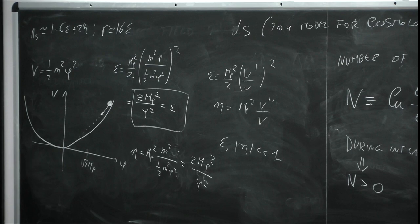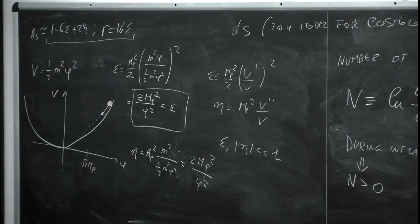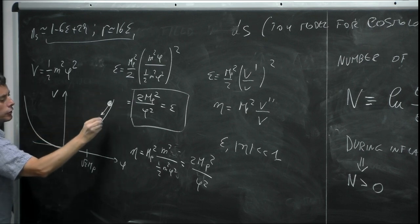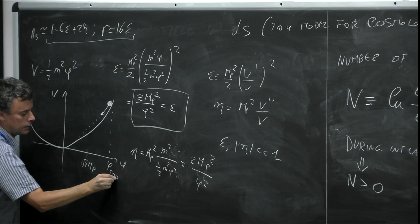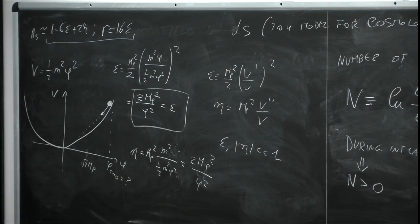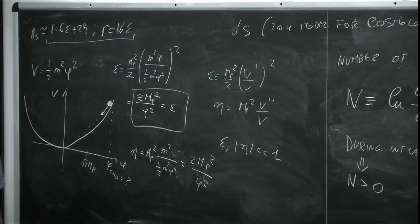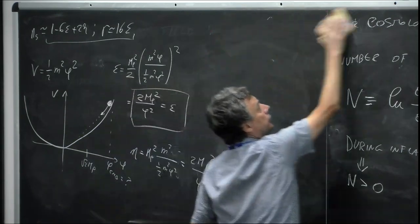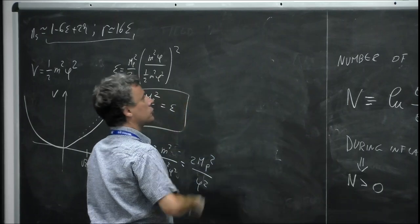Inflation ends when φ = √2 · M_Pl — that's when the slow-roll parameters are no longer smaller than one. What you need to do is evaluate these relations at some given moment during inflation, because the value of φ when the CMB modes were produced is higher than φ at the end of inflation. So we need to evaluate at φ_CMB. The first thing to do is solve the equations of motion to find φ as a function of N — this will be a homework.